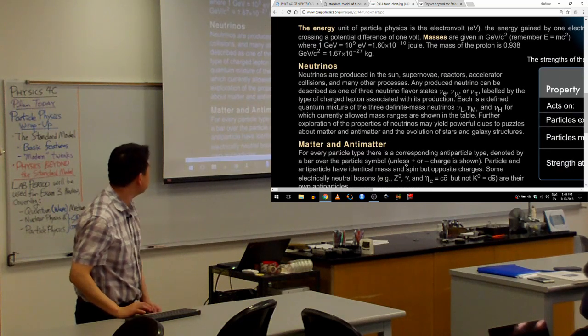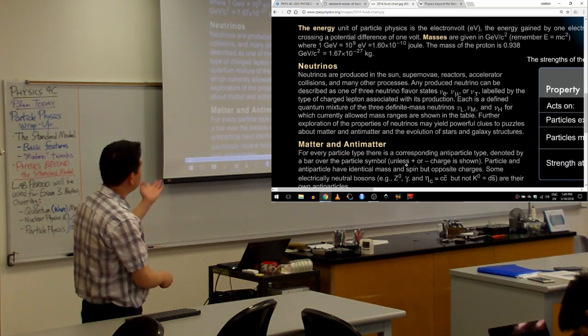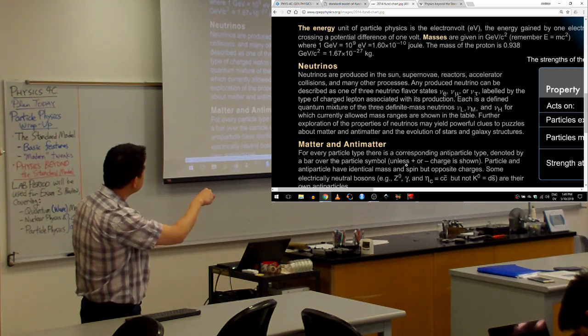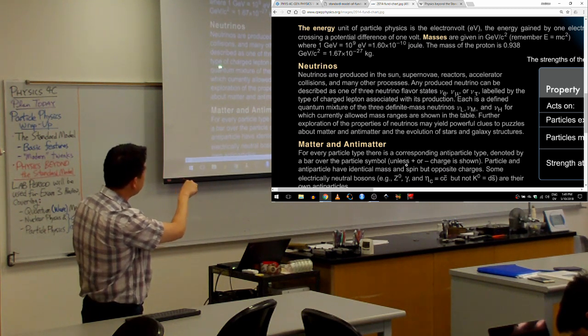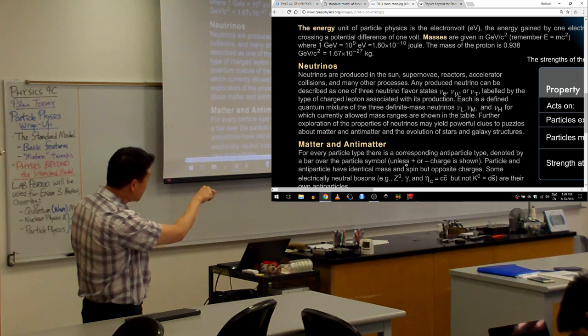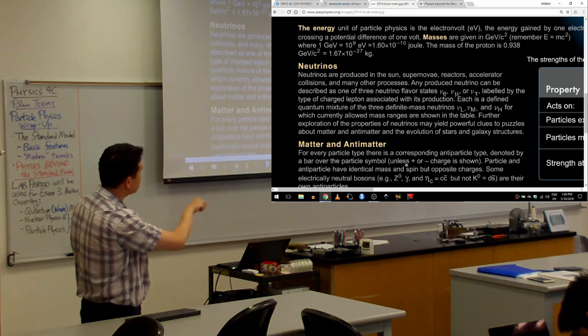So neutrinos, I'll just read it out loud, are produced in the sun and many other processes. Any produced neutrino can be described as one of the three flavor states, weak flavor states: electron, muon, or tau labeled by type of the charge of the lepton associated with its production. Each is a defined quantum mixture of three definite mass neutrinos.